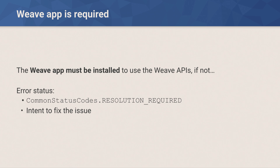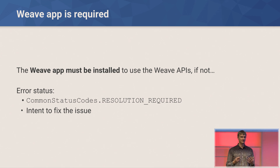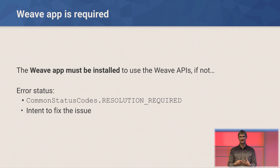One important property of Weave API Client is that we require that the Weave application is installed on the user's device. This brings two benefits: for developers, you will not need to care about API updates — we will push all fixes along with Weave app updates. For users, they will have a consistent experience across the board, so there won't be a case where two applications targeting the same device types have different API versions and see different devices. If the Weave application is not installed, be prepared to handle an error: the API will fail with a special status code, resolution required, along with an intent that you need to launch to fix things.